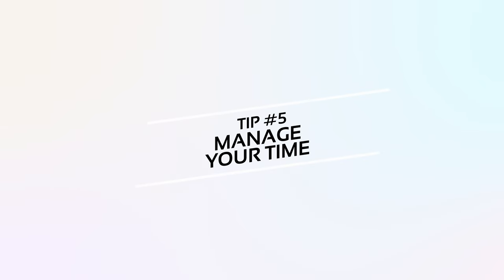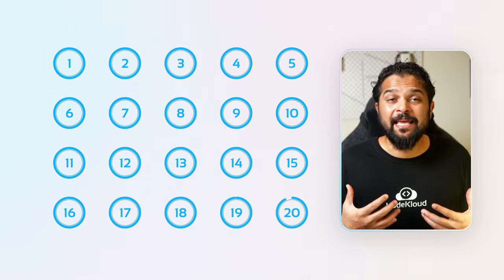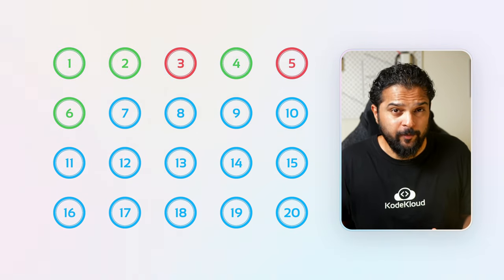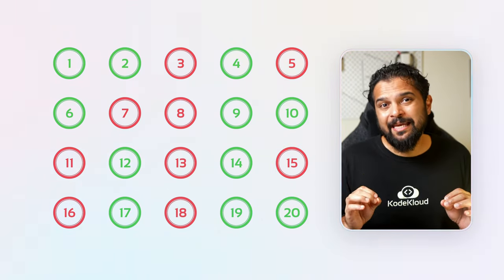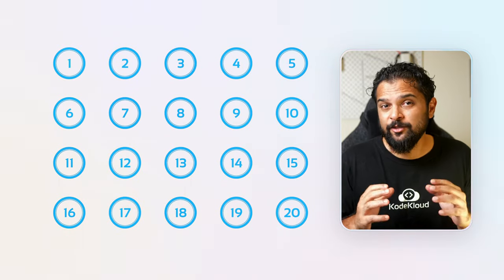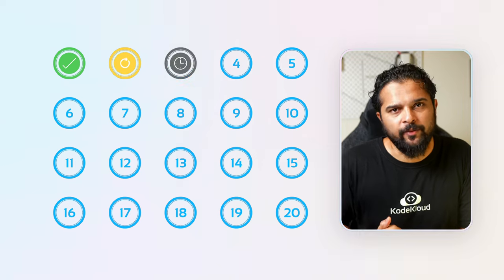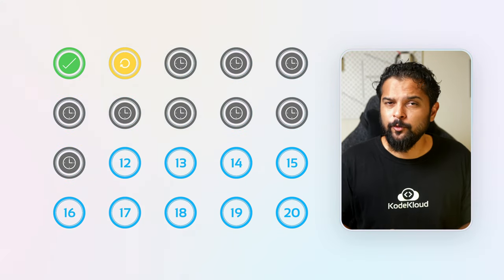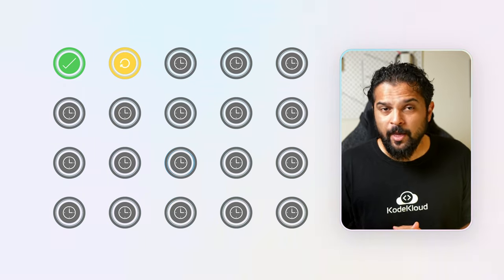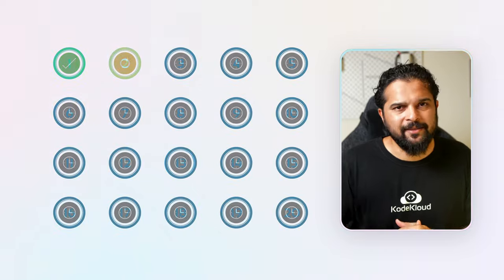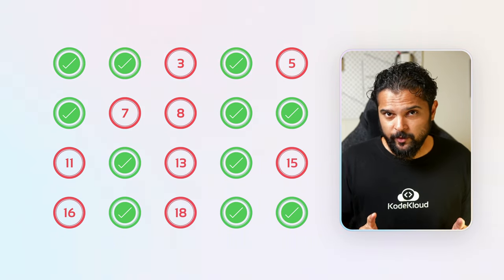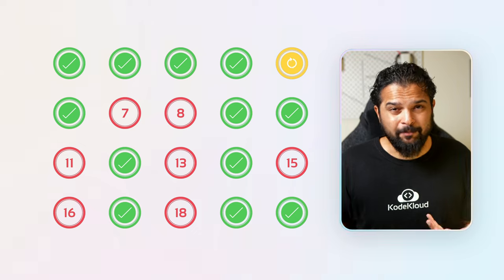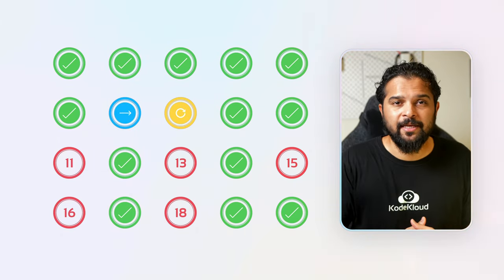Tip number five is about managing time effectively. The exam consists of 15 to 20 questions, each with a varying difficulty level and weight. It's important to be smart about how much time you spend on each question. Do not get stuck on a single question and waste your entire time on it. You don't need 100% to pass — you only need 66% to clear the CKA exam. My recommendation is to attempt all the easy questions first, time-limit yourself for each question, and if you're stuck on any question for more than 10 minutes, skip it and come back at the end.